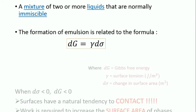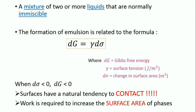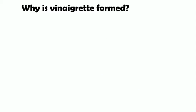Emulsion is a mixture of two or more liquids that are normally immiscible. The formation of emulsion is related to the formula below. Let's look at our example today.